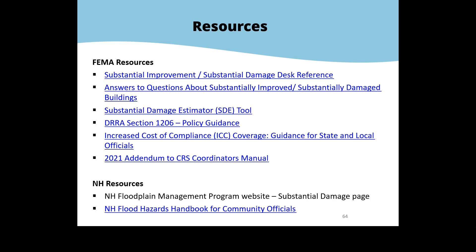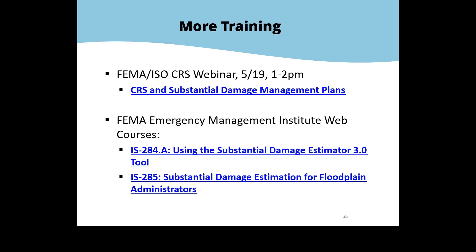The New Hampshire Flood Hazards Handbook for Community Officials was created by the state's Silver Jackets team — a multi-agency team devoted to reducing flood risk in the state. It includes information on preparing for and responding to flood disasters, including a section on floodplain management permitting and substantial damage determinations, as well as information about FEMA grants and state assistance. There is also training coming up: FEMA and ISO are holding a webinar about CRS and the new Substantial Damage Management Plan on May 19th. FEMA's Emergency Management Institute has free web courses on using the Substantial Damage Estimator Tool.